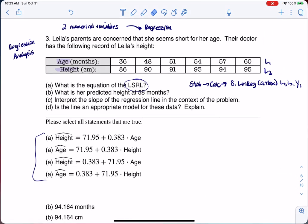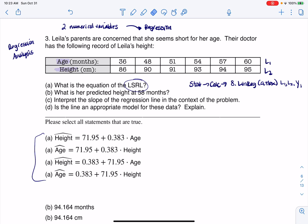Alright, so if I look at my calculator, my calculator said A plus BX, which is what we want, and they said A should be 71.95 and B should be 0.383. So if I substitute this in, this would be Y would equal 71.95 plus 0.383X.